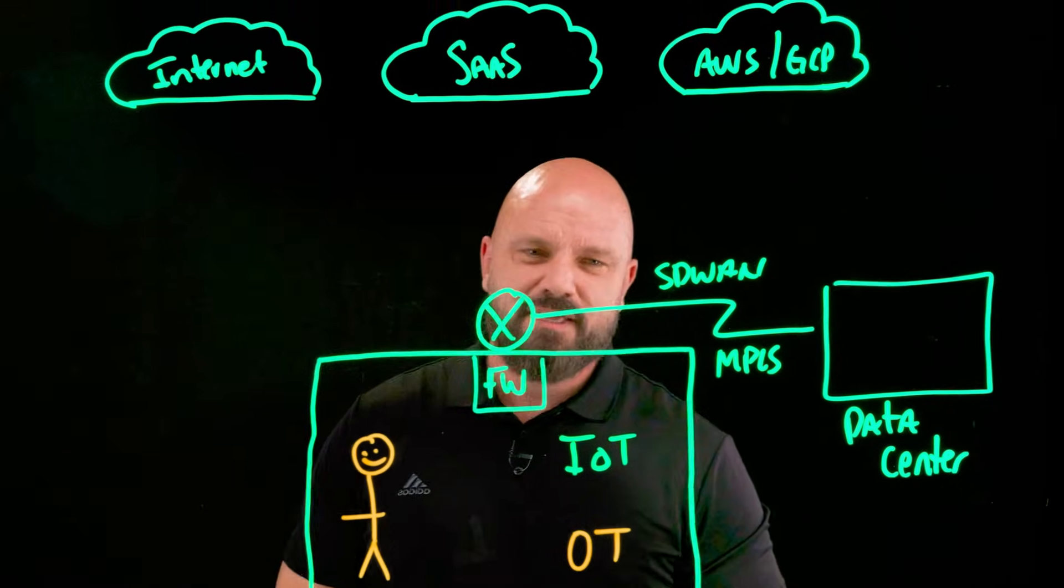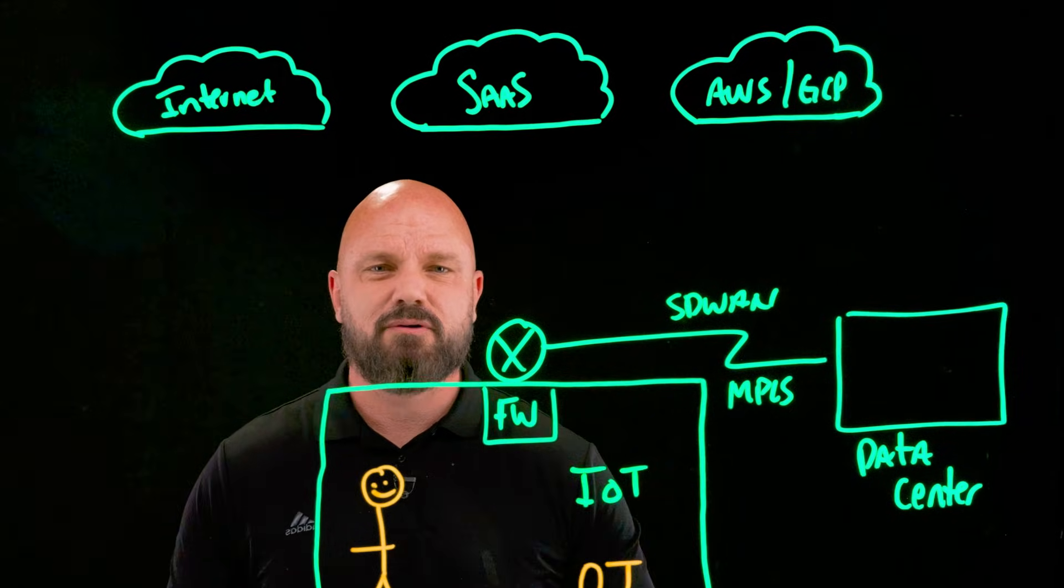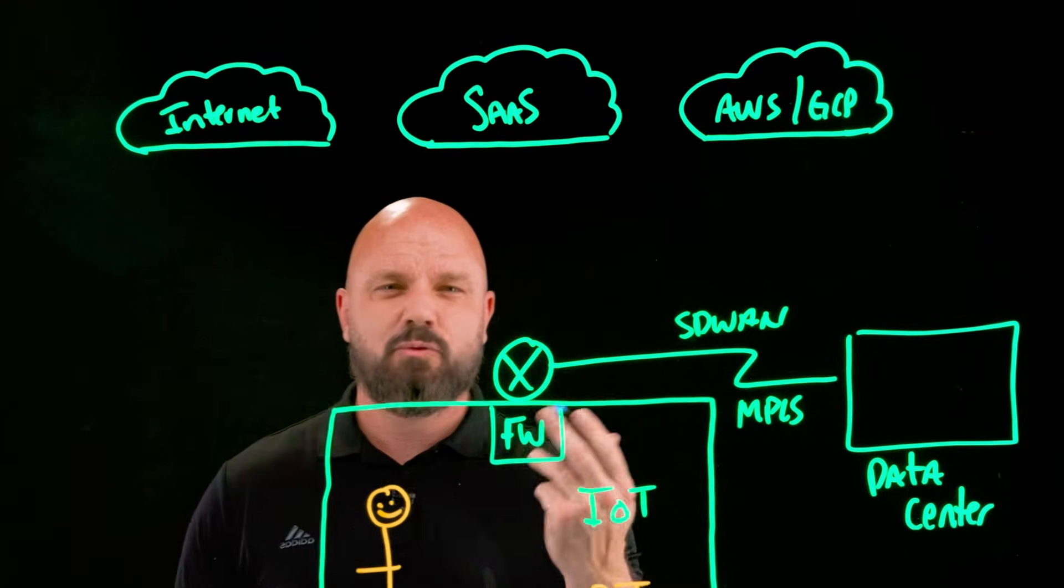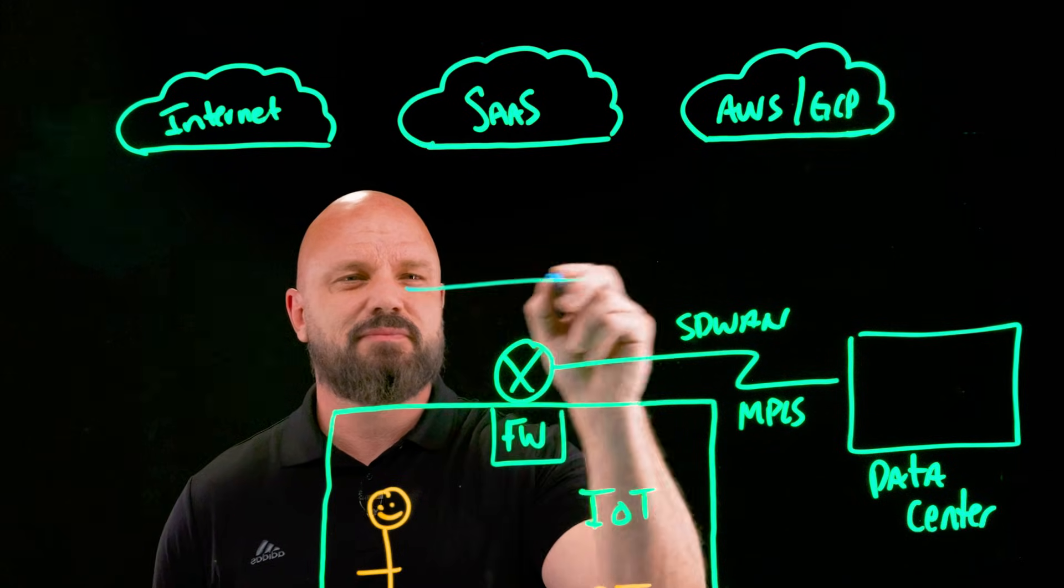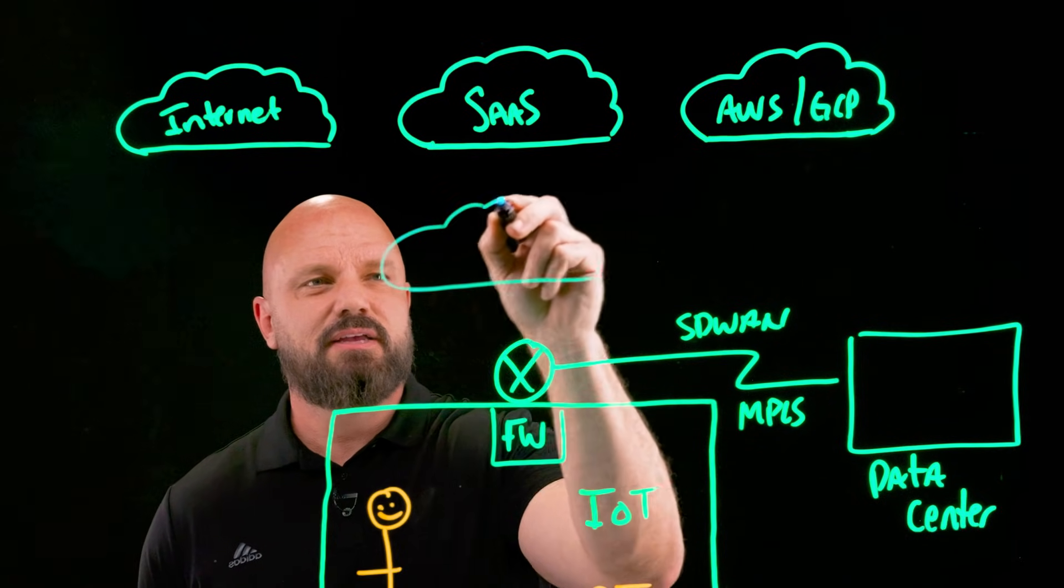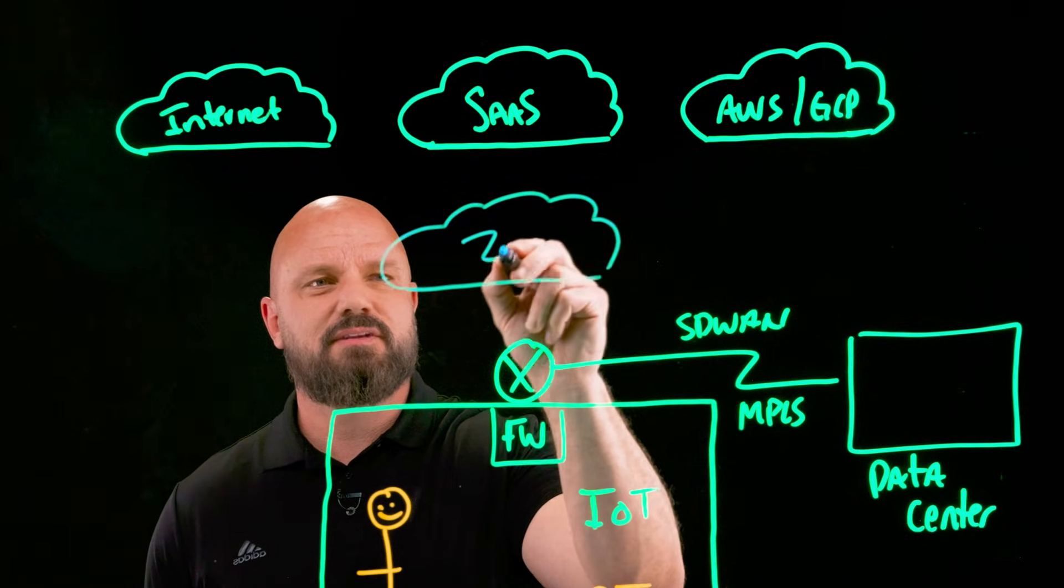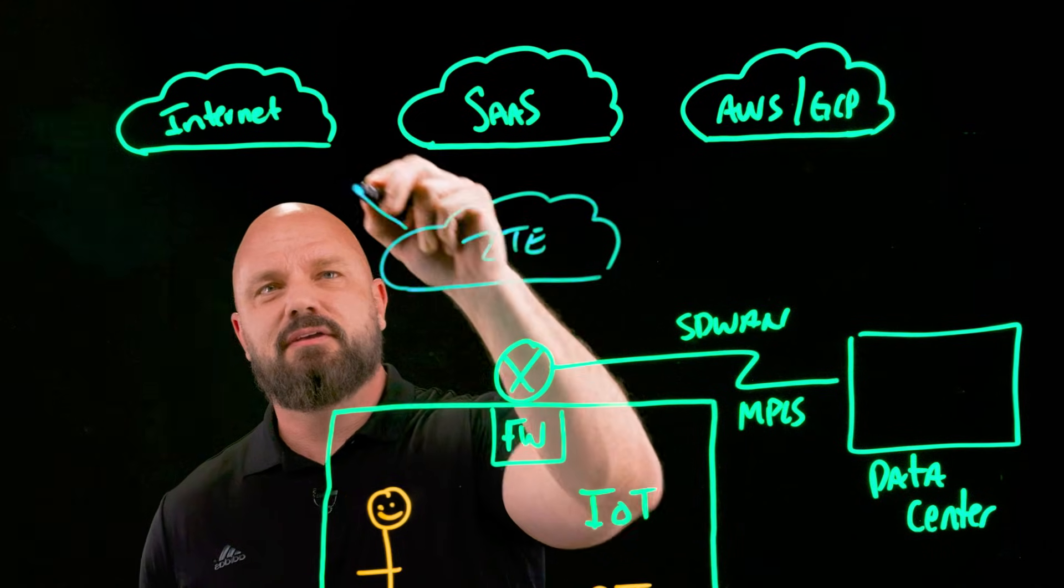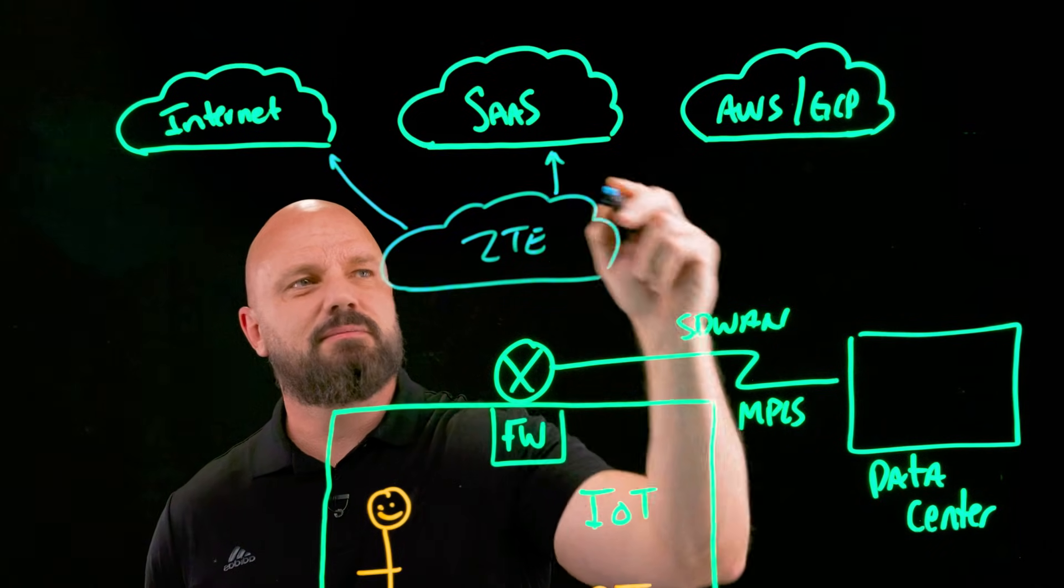But everything we do has to be a cloud-first approach and has to be predicated on identity. So this is where we introduce the Zero Trust Exchange from Zscaler. And you know the drill. ZTE for short, allow the good, block the bad, stop the stupid.